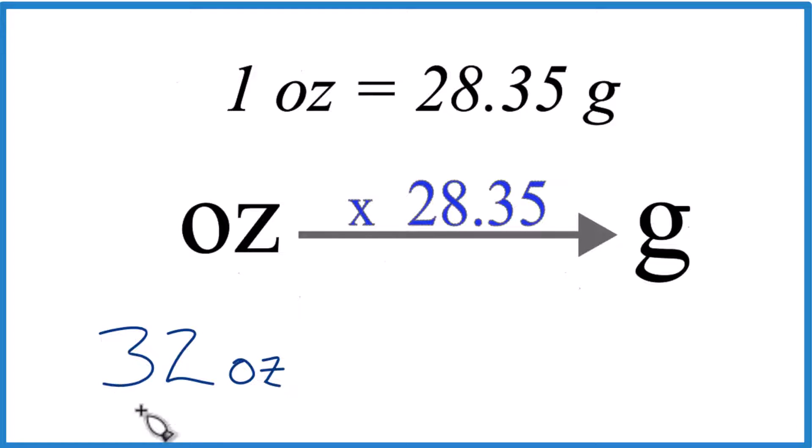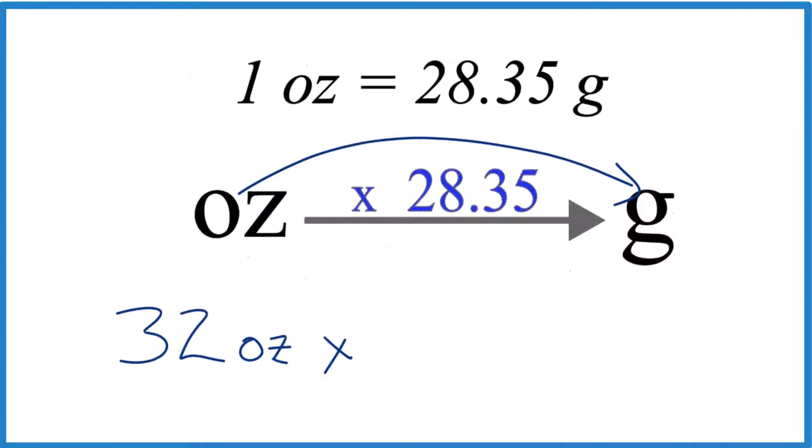So in this case, we have 32 ounces, we're going from ounces to grams. We're going to multiply by 28.35, just like this right here. And that's 28.35 grams, that's one ounce. So 28.35 grams per ounce. That's our conversion factor.